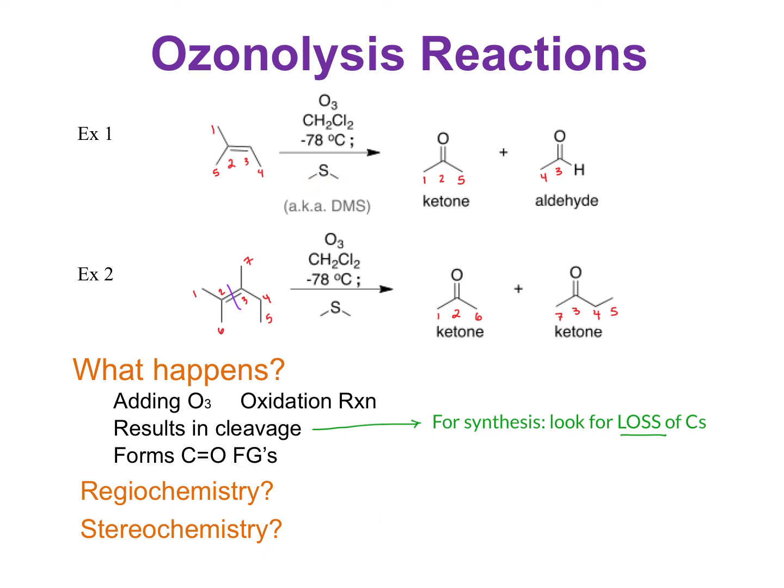Because we're in a section where we're talking about double bond chemistry we're going to check and see if there's any special regiochemistry or stereochemistry. The regiochemistry for this is just wherever the double bond is. Wherever the double bond is that's where you're going to split it and that's where you're going to get your products from. There's no rearrangement, there's no carbocations, there's nothing like that.